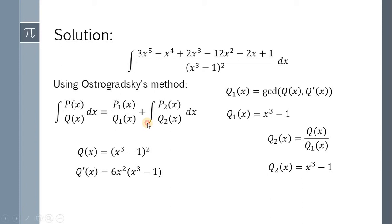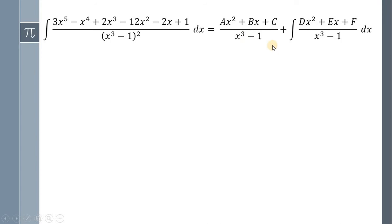Now, since Q sub 1 of x is a third degree polynomial, P sub 1 of x is a second degree polynomial. Therefore, P sub 1 of x is equal to Ax squared plus Bx plus C. Also, P sub 2 of x is also a quadratic, so we have Dx squared plus Ex plus F. Now, our original integral becomes Ax squared plus Bx plus C all over x cubed minus 1 plus the integral of Dx squared plus Ex plus F all over x cubed minus 1 dx.